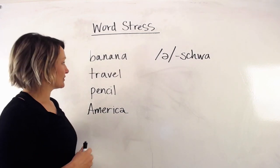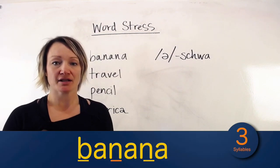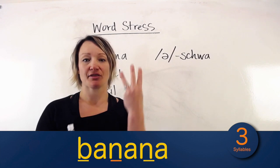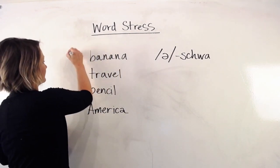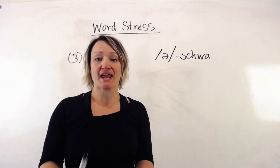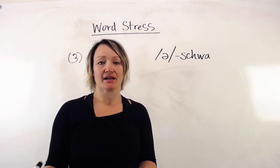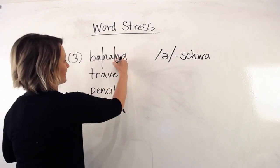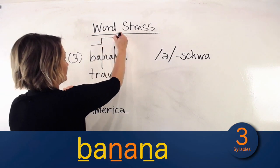Let's take a look at what I have on the board. Our first word is 'banana.' How many syllables is that? Banana — three syllables. Now let's decide where the stress is in this word. Where is it strongest?